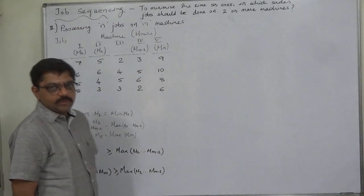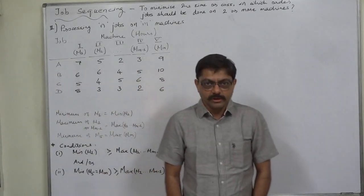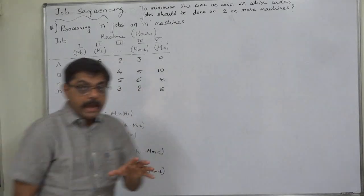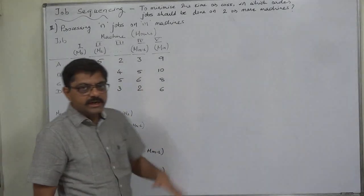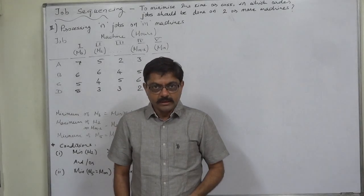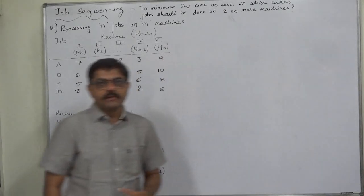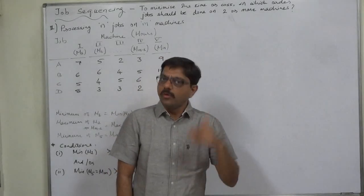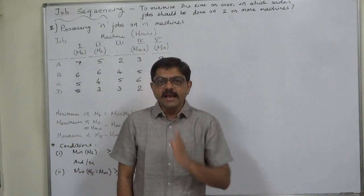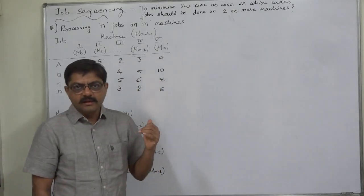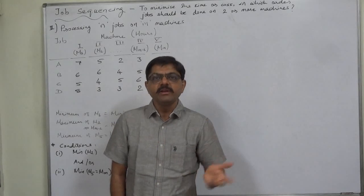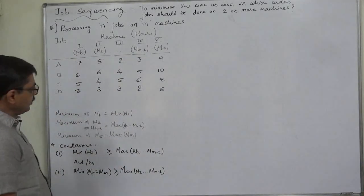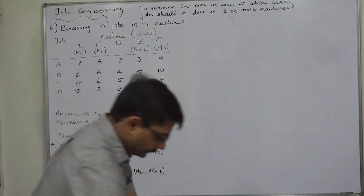Here we have five machines. To use the algorithm, we need to work with two machines only, so we have to convert this data into a two-machine format. But before that, we have to check whether some conditions are satisfied. There are two conditions — if any one or both are satisfied, then we can convert the data and solve the problem through Johnson's algorithm.